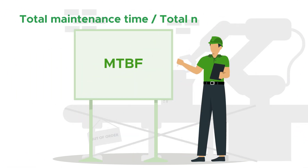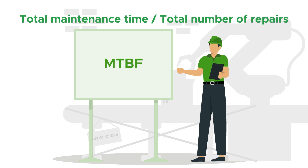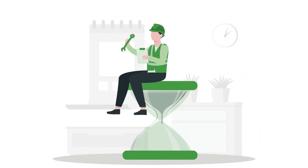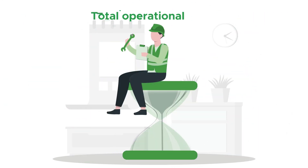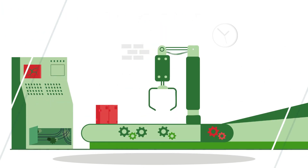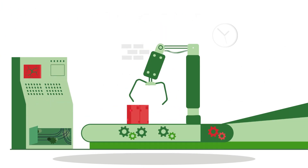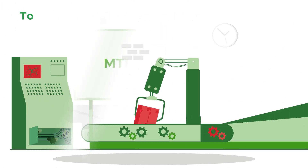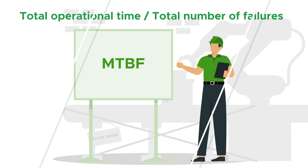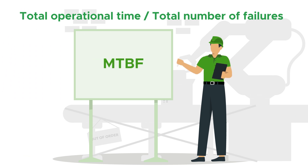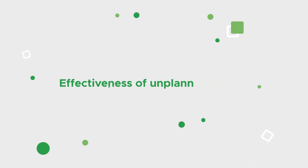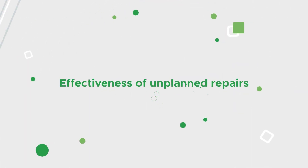MTBF is the average time between two failures of a system. It can be calculated by taking the total operational time of an asset and dividing it by the number of failures that occurred within that time period. MTBF can provide insights into the thoroughness and effectiveness of unplanned repairs.